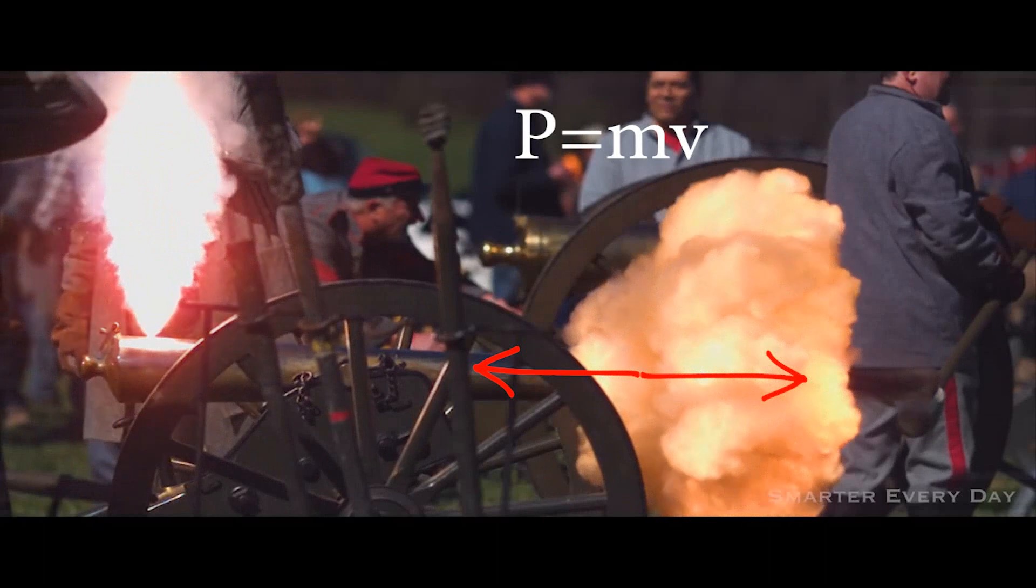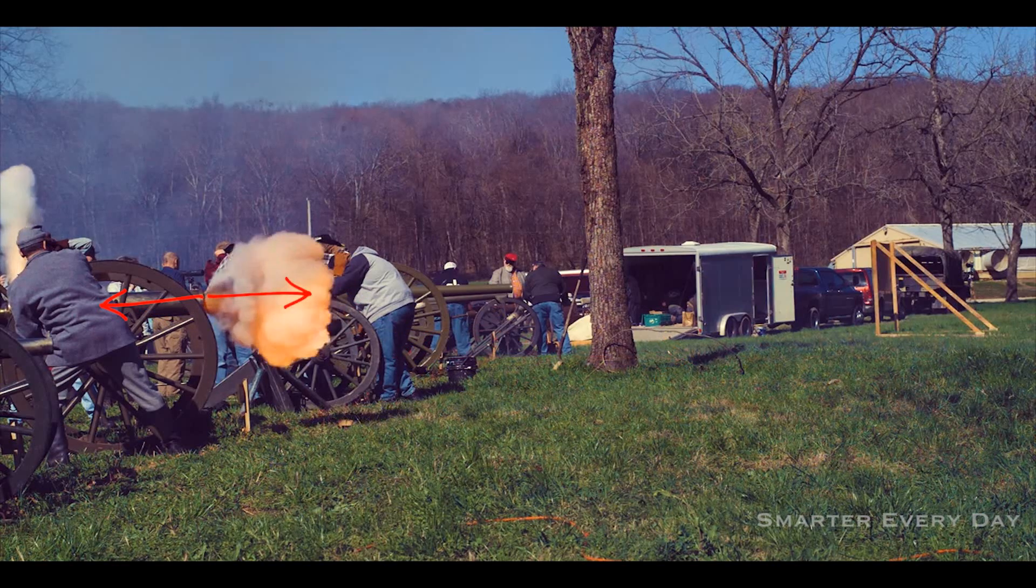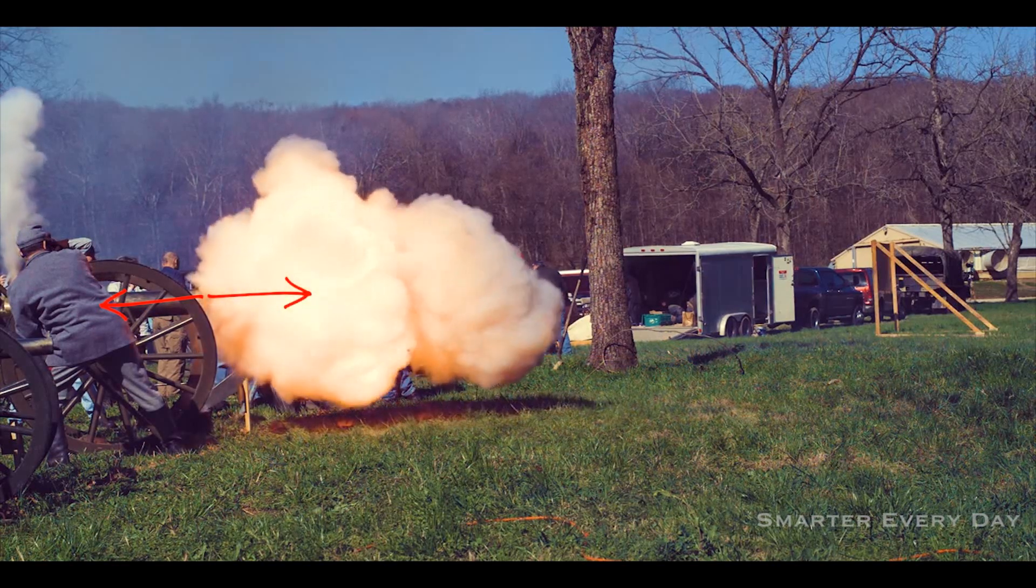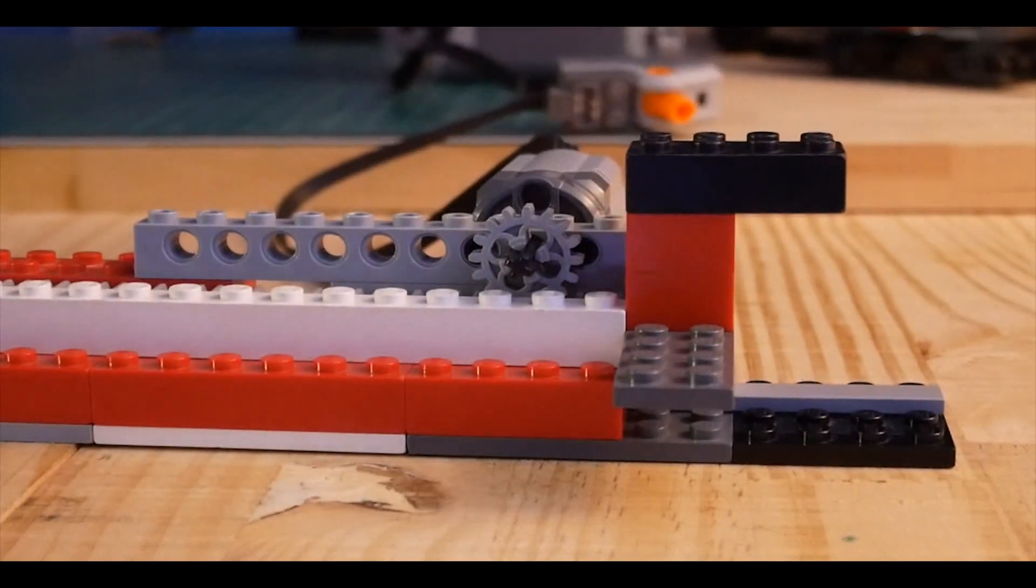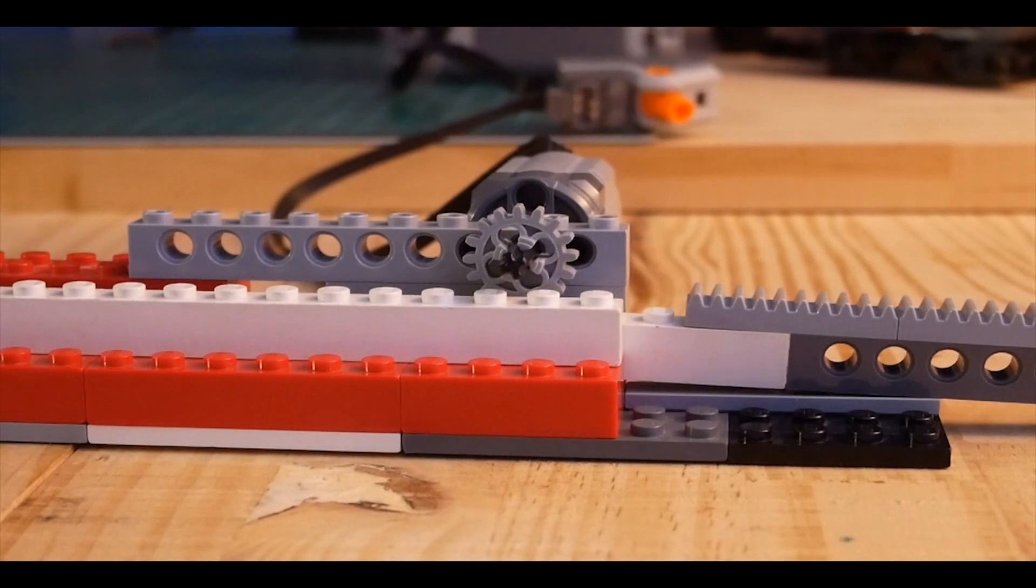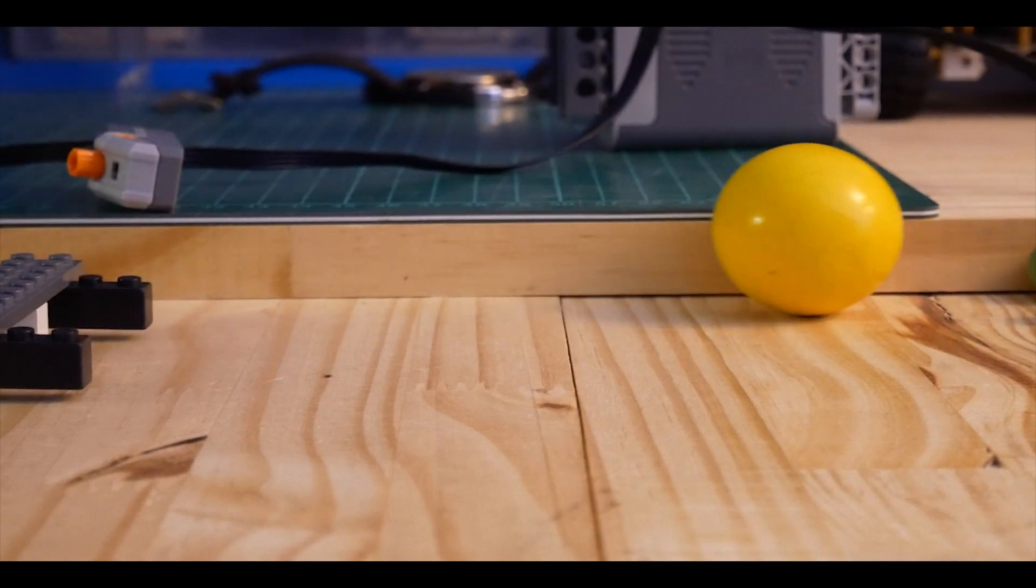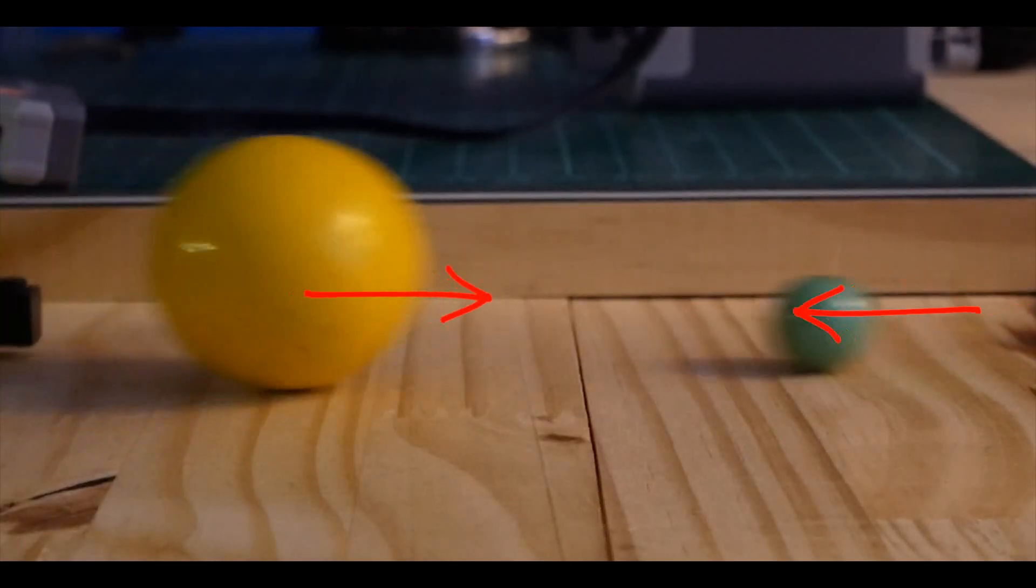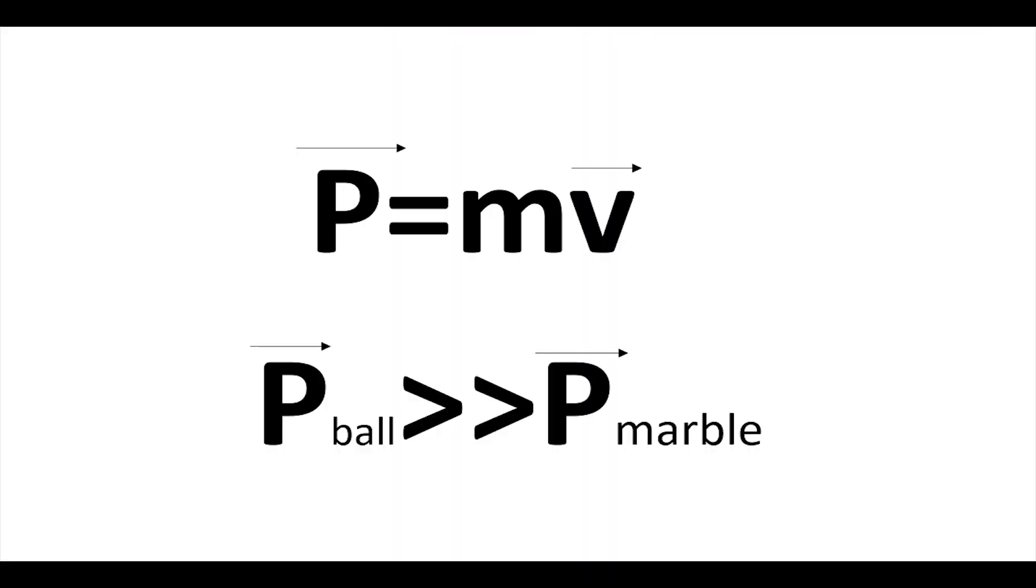The momentum also counts. In order to exert the same force on two bodies, we use this mechanism. Momentum equals the mass times the velocity. And so, the bigger ball with the bigger mass will have a bigger momentum than the marble.